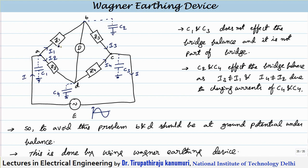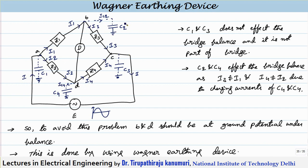But if you take capacitance C2 — the current coming in is I1 and the current going out is I3 — even under balanced condition, some current will pass through C2, let us call it Ic2. So I1 will be the sum of I3 plus Ic2. Because we are writing the balance equation where the product of adjacent impedances are equal, we have to take the effect of this capacitance also, because whatever we have calculated will give an error. The same applies here: I2 is coming in, I4 is going out, and Ic4 is passing through C4.